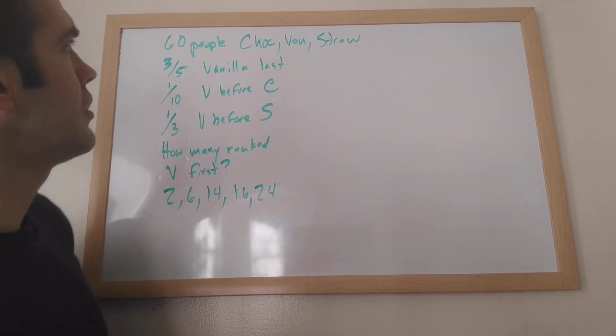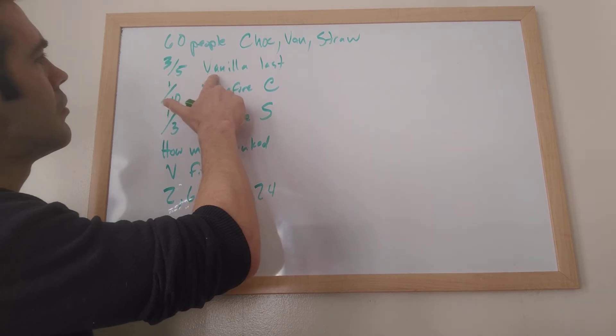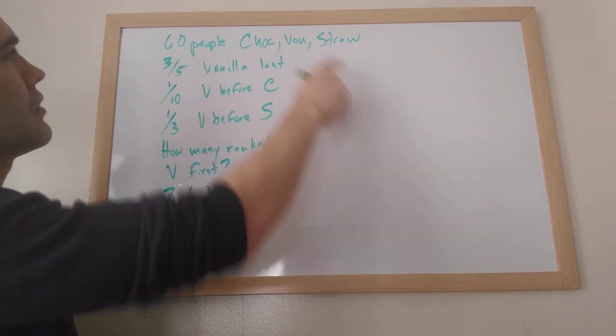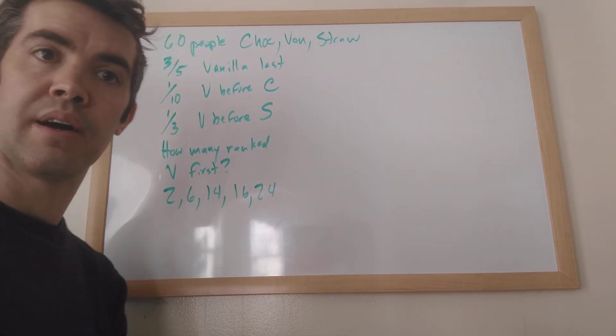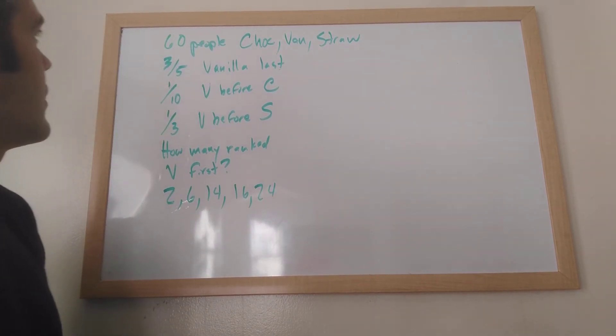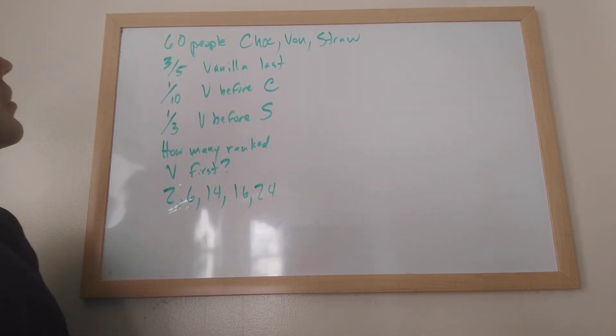So what are we going to do? Well, I think most people figure out that, look, anybody who ranks vanilla last, they couldn't have ranked it first. So the three-fifths of the people who ranked it last, they don't count. So what's three-fifths of 60? If you divide 60 by 5, you get 12. 12 times 3 is 36.